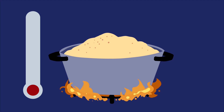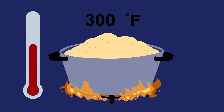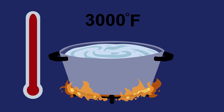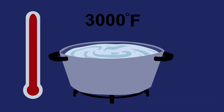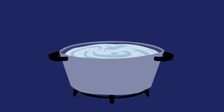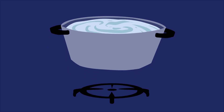Sugar, for example, melts at 300 degrees Fahrenheit. Sand must be heated to 3,000 degrees Fahrenheit in order for it to melt. And once it is molten or melted, it can be shaped or moulded into all the products we know.